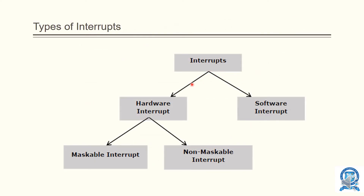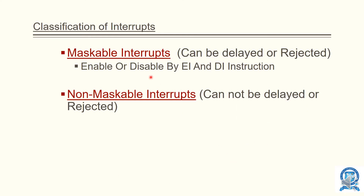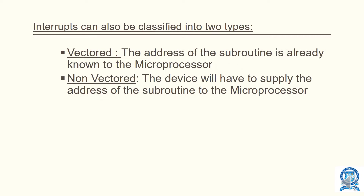Interrupts can be classified into two types: hardware and software interrupts. Hardware interrupts can be further classified into maskable and non-maskable interrupts. Maskable means they can be delayed; non-maskable means they cannot be delayed — the highest priority is given to non-maskable interrupts.